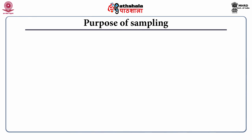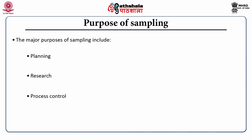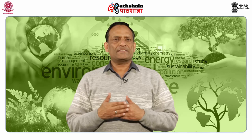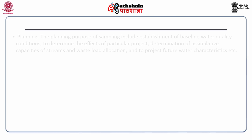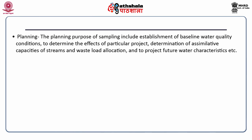What is the purpose of sampling? There are four major purposes of water sampling: planning, sampling for research, sampling for process control, and sampling for regulations. The planning purpose includes establishment of baseline water quality conditions, determination of the effects of a particular project, determination of assimilative capacities of streams and waste load allocation, and projecting future water characteristics.